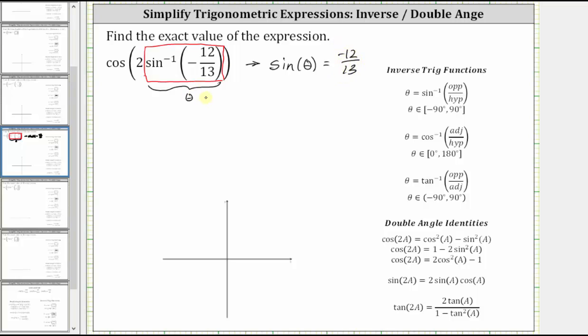This also indicates we can write the original expression as cosine two theta. If we take a look at the double angle identities for cosine, notice how there is one that only involves sine theta, the second one, where cosine two A equals one minus two sine squared A. And therefore, cosine two theta is equal to one minus two times sine squared theta.